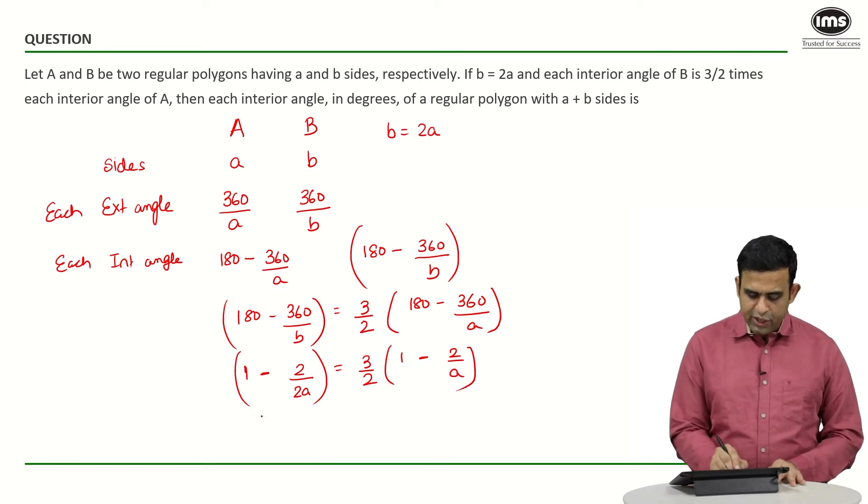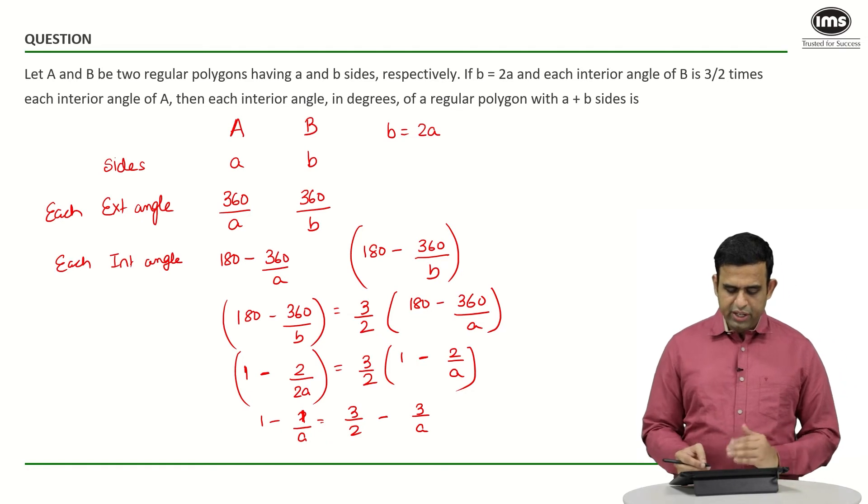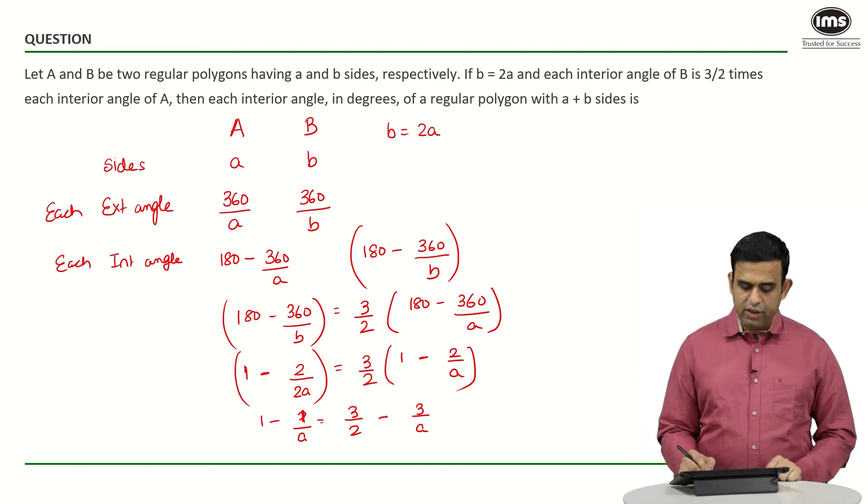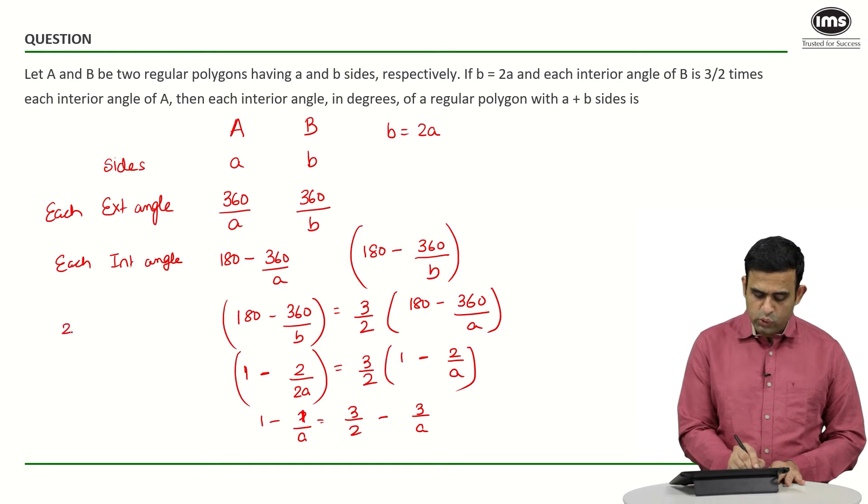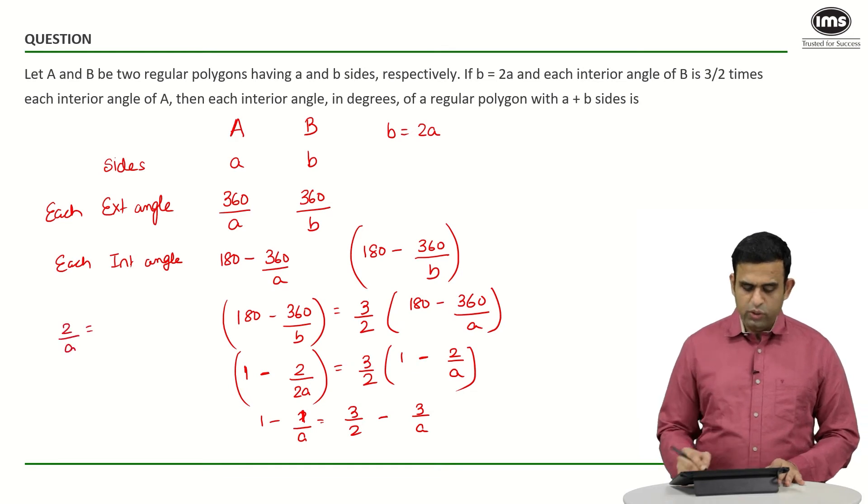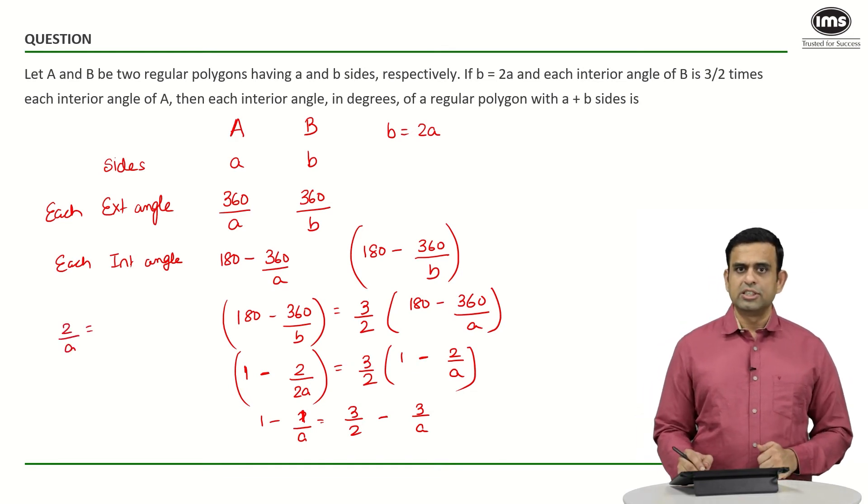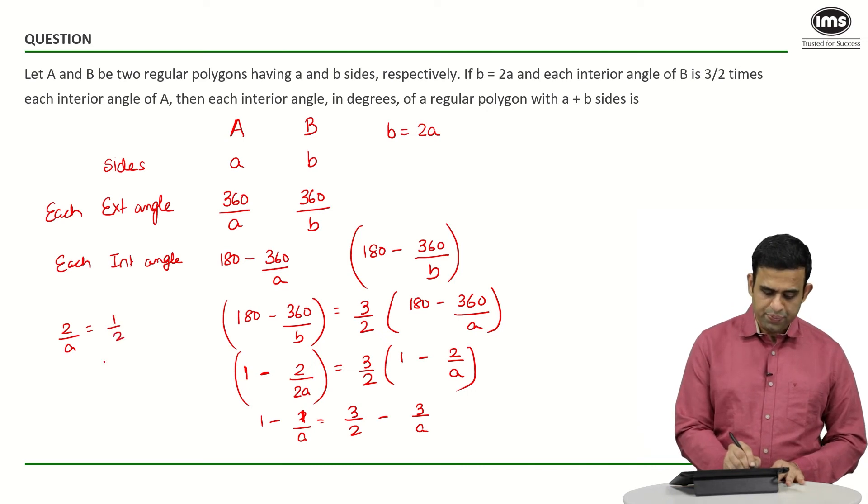If I bring the A term on one side, I get 3 by A minus 1 by A, giving 2 by A equals 3/2 minus 1, which becomes 1/2. So the value of A equals 4.